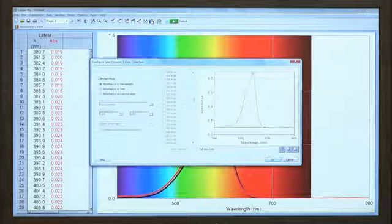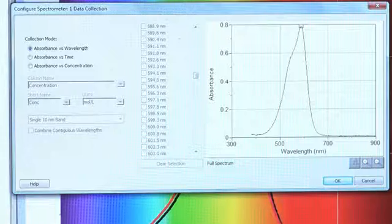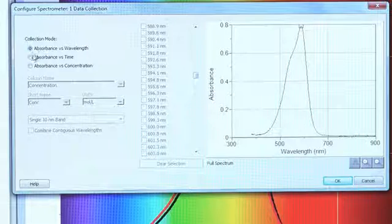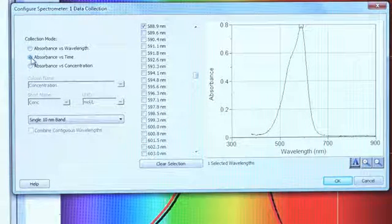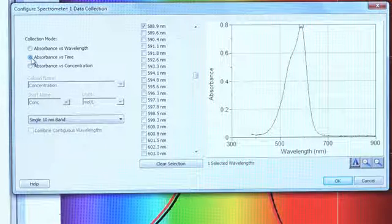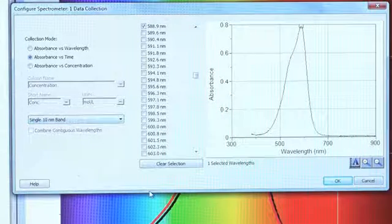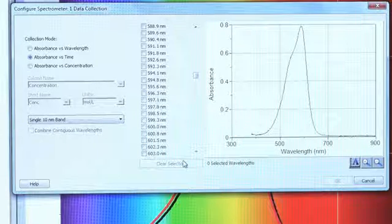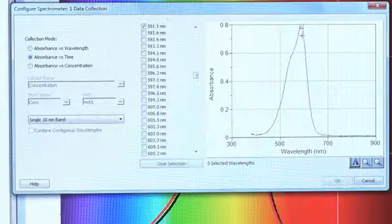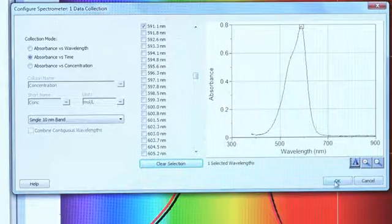Choose absorbance versus time as the collection mode. And to choose a wavelength, first click on the Clear Selection button under the list of wavelengths. To choose your wavelength, choose one from the list or click on the graph in the dialog box and then click OK.